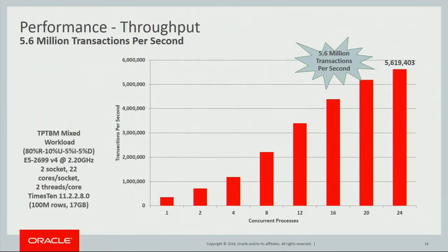Fast response time usually turns into fast throughput. Running that same TimesTen benchmark on one machine in an 80/20 environment — 80% reads, 20% updates — gives you over five million transactions per second on a single node. Not a bad number. Not everybody needs to do transactions in two millionths of a second, but if you do, there's really only one product you can use.